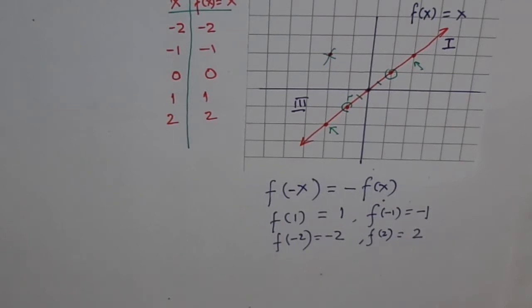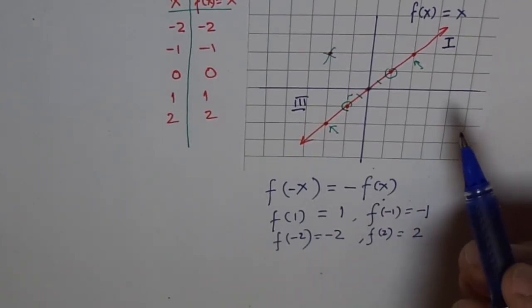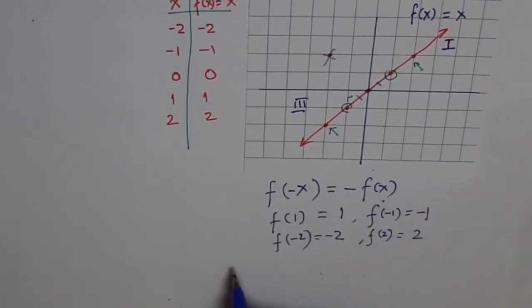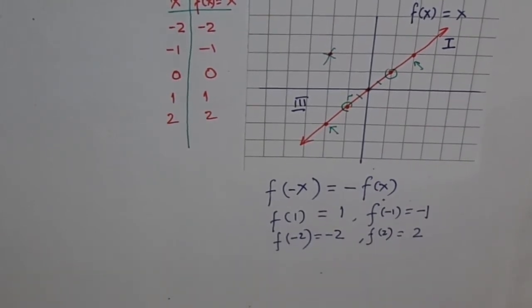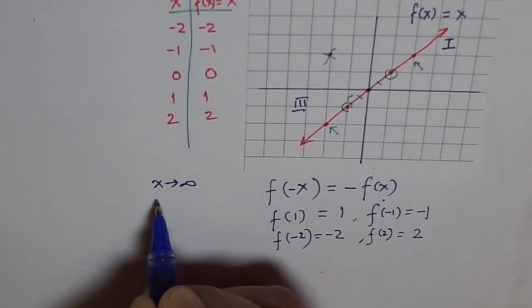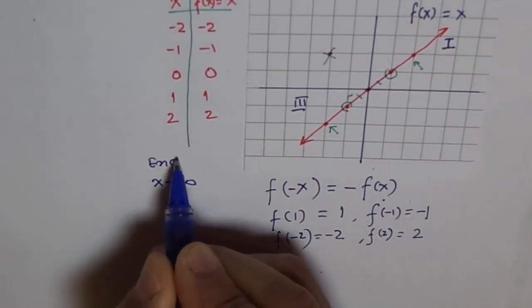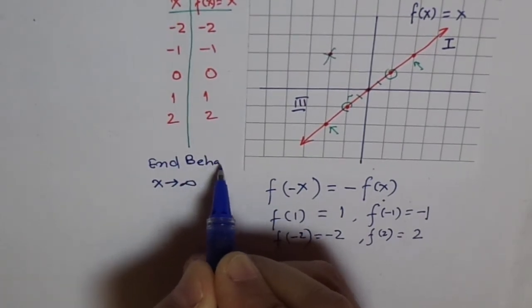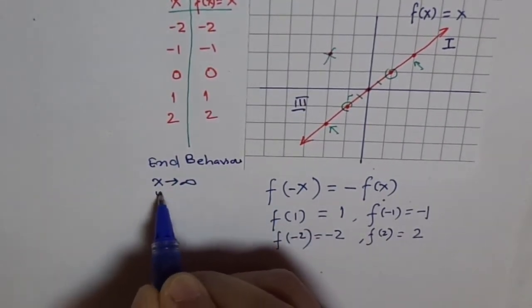Functions which have odd symmetry amongst the parent functions we are going to study: there is one, reciprocal 1 over x. The other functions are x cube and so on. They are all odd functions. Now, straight line, end behavior. End behavior is, let me write here: as x approaches infinity, what happens to y? Y also approaches infinity.